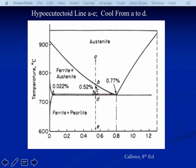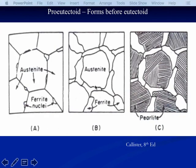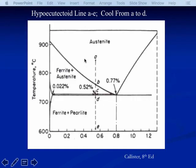Where is that ferrite going to form? It's going to form on grain boundaries. At point A we start to make little ferrite nodules at the boundaries, and by point B we have ferrite regions all along the grain boundaries. You can estimate how much ferrite using the reverse lever law. The composition runs from 0.02 to 0.77; our alloy is at 0.52. So the ferrite fraction is about 0.25 out of 0.75 total — about one-third of the material has turned into ferrite, and the remaining two-thirds is austenite.